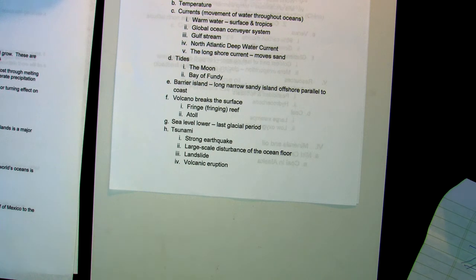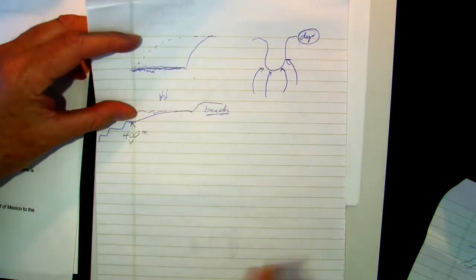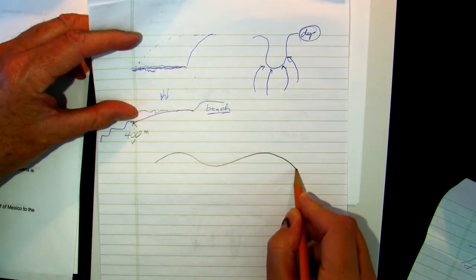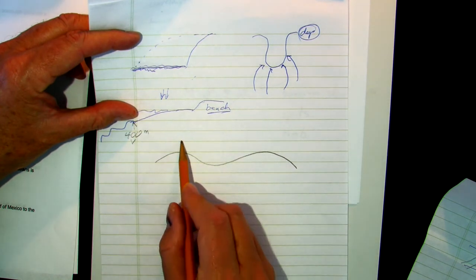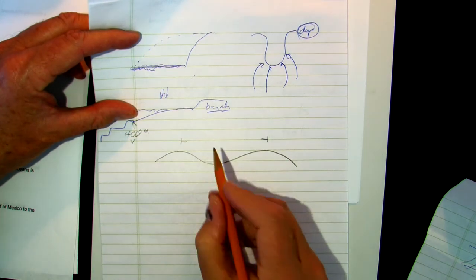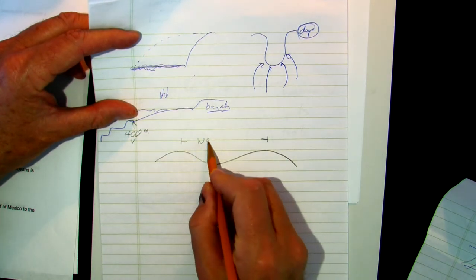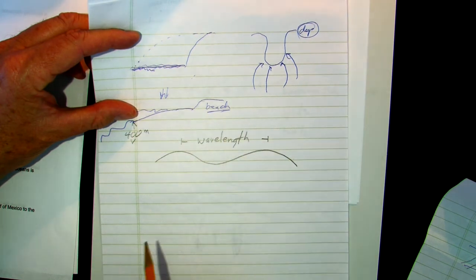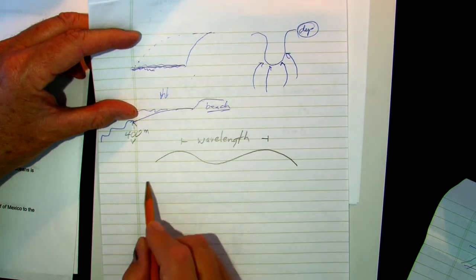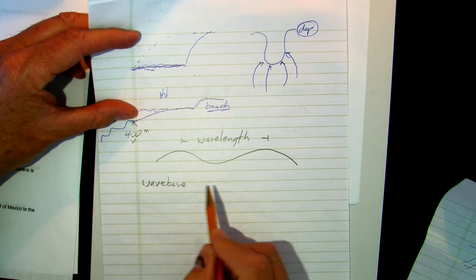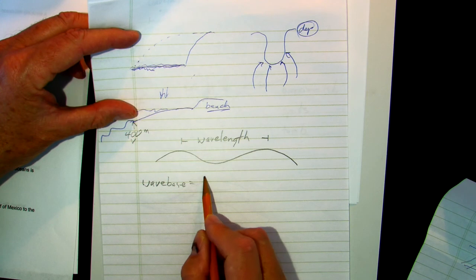Waves have a wavelength. The wavelength is measured from crest to crest. This is one wavelength. The wave base, what we call wave base, is one half the wavelength.